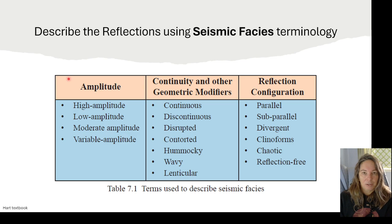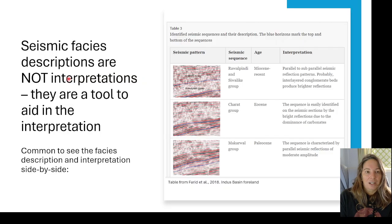Reflection configuration patterns can be parallel, you could have subparallel, divergent, you could have clinoforms. So clinoforms is one of the terms that we use to describe the seismic, but it also has a lot more geologic meaning already built into it. Chaotic and then reflection free.